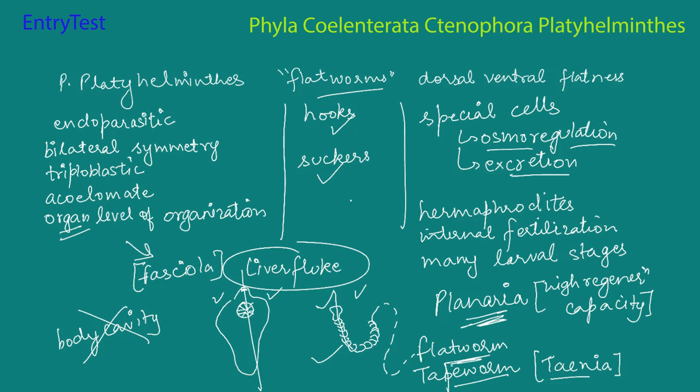So far in this video we have covered three different phylums: Coelentrata, Ctenophora, and Platyhelminthes. That is all for this video. In the next video we are going to start with phylum Aschelminthes and then move on to phylum Annelida.